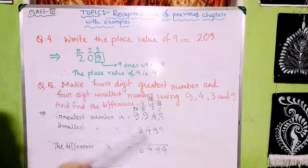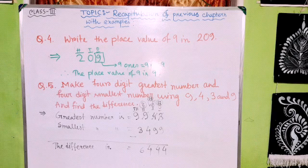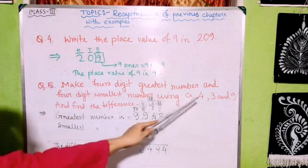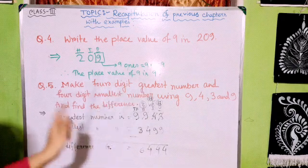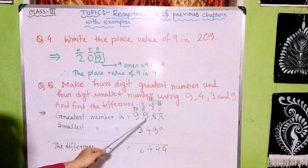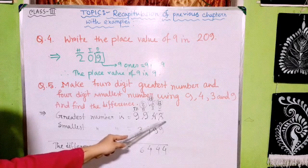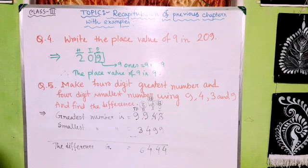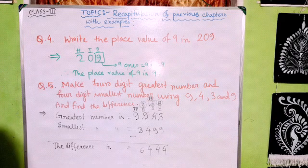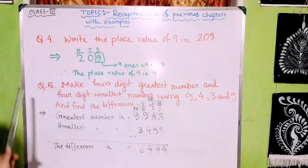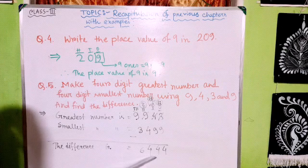The fifth question asks us to make the greatest and smallest four-digit numbers using the digits 9, 4, 3, and 9, and find their difference. For the greatest number, we arrange digits in descending order: 9 in thousands, 9 in hundreds, 4 in tens, 3 in ones — giving 9943. The smallest number is the reverse: 3499. The difference, by subtracting the smallest from the greatest, is 6444.